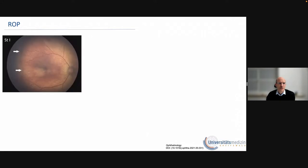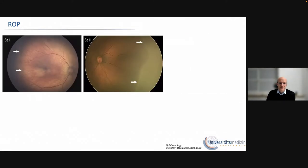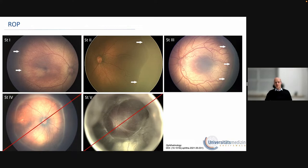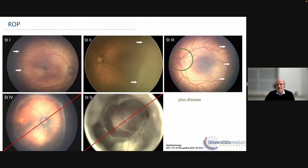The first is retinopathy of prematurity. These are the different stages: stage one, two, three on the top row, and stage four and five at the bottom — we don't want to see those two. We want to pick up a patient roughly when they hit stage three. There are a lot of vascular changes, and this vascular change is what we try to pick up both in ophthalmoscopic exams and when we use AI algorithms.